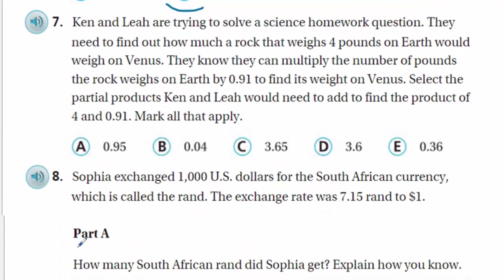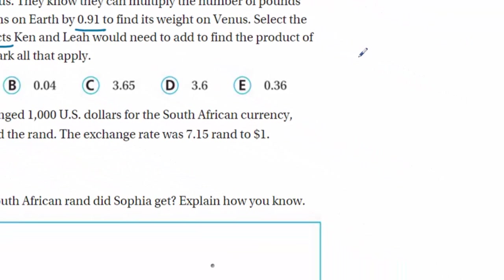Ken and Leah are trying to solve a science homework question. They need to find out how much a rock that weighs 4 pounds on Earth would weigh on Venus. Oh, cool. They know they can multiply the number of pounds the rock weighs on Earth by 0.9100 to find its weight on Venus. Select the partial products Ken and Leah would need to add to find the product of 4 and 0.9100. Mark all that apply. Interesting. You know, what I'm thinking is that an area model might be the way to go. Why don't we do an area model?